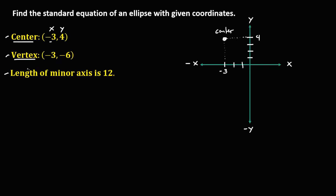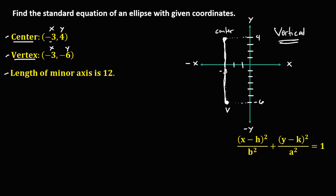For the vertex coordinate, x is negative 3 and y is negative 6. We mark negative 6 on the y-axis and connect to plot the vertex point. Observing the graph, the vertex is in a vertical position, so therefore this ellipse is a vertical ellipse. The formula for the standard equation of a vertical ellipse is: x squared over b squared plus y squared over a squared equals 1.